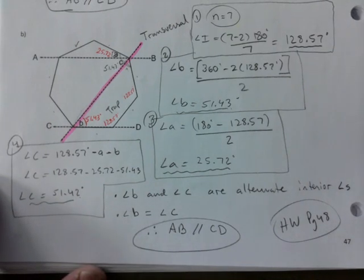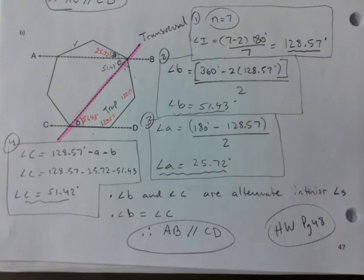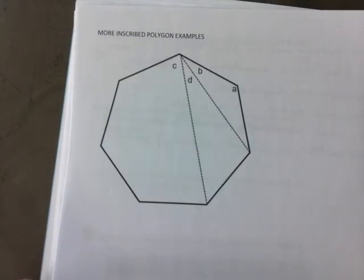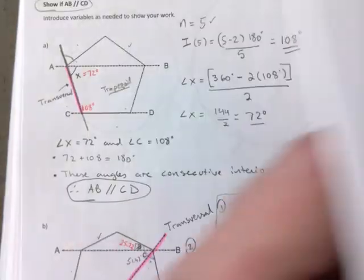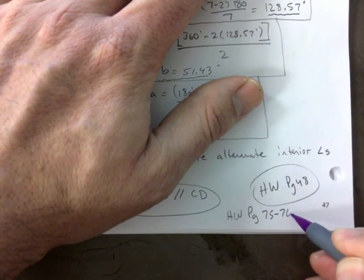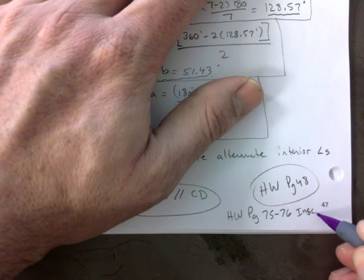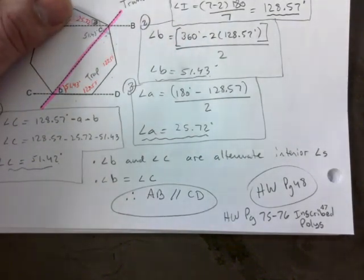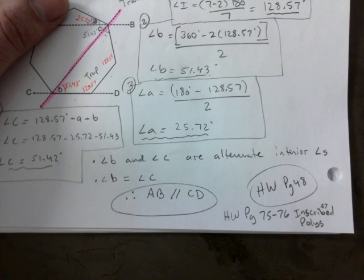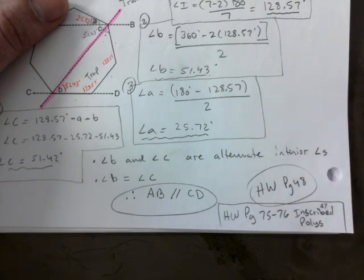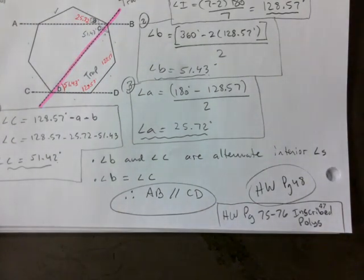If you need more practice with inscribed polygons, you want to look up, I'm going to give you another page to try. You want to go to pages 75 and 76. So I'm going to write that down on your homework as well. Homework page 75 to 76, inscribed. So 48, that's right next door, next page. You try showing whether or not lines are parallel. If after today's lesson you're like, I need more practice on inscribed polygons, go to 75 to 76 and I'll post the key as well. I'll probably have to scan it. I don't think I have that scan just yet. But that's it for today, guys. Thank you, thank you.